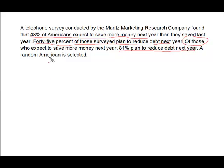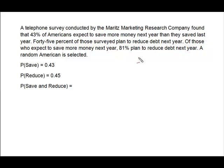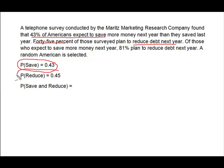A random American is selected. So, I've gone into the problem and started collecting my probabilities. 43% of Americans expect to save more money — so the probability that they're going to save is 0.43. 45% plan to reduce debt — so probability of reduce is 0.45.